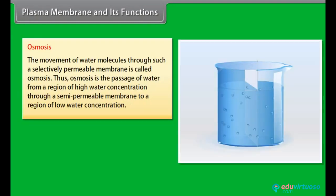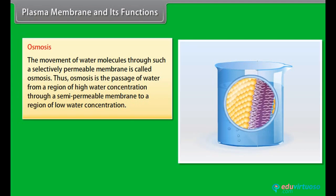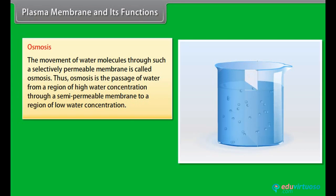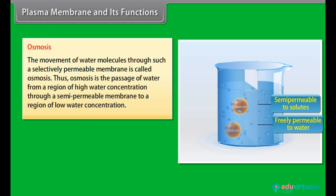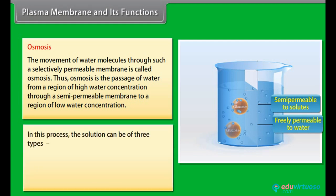The movement of water molecules through a selectively permeable membrane is called osmosis. Osmosis is the passage of water from a region of high water concentration through a semi-permeable membrane to a region of low water concentration. In this process, the solution can be of three types: hypertonic solution, hypotonic solution, and isotonic solution.